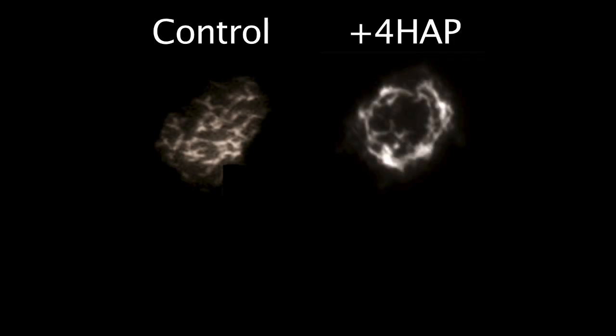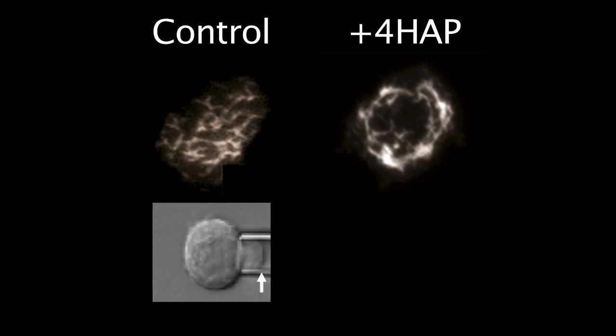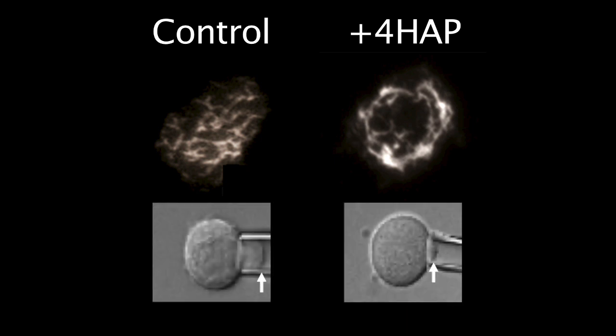When we add 4-HAP to a cell, its myosin-2 fibers rearrange and increase in the cell's skin. Because the myosin-2 pulls on the actin fibers, the cell stiffens. 4-HAP does the same thing to cancer cells, making them stiffer and more like their healthy counterparts.